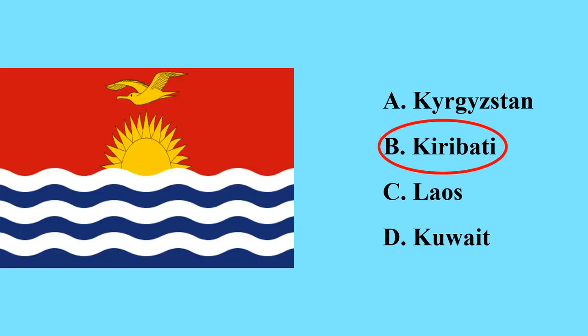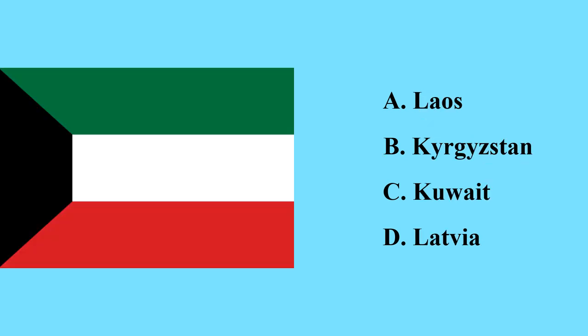This is the flag of Kiribati — it is a country in Oceania. You can see this flag — this is the flag of Kuwait, a country in Asia; its capital city is Kuwait City. Kuwait is one of the countries which exports the largest amounts of oil and has the most expensive currency in 2024.